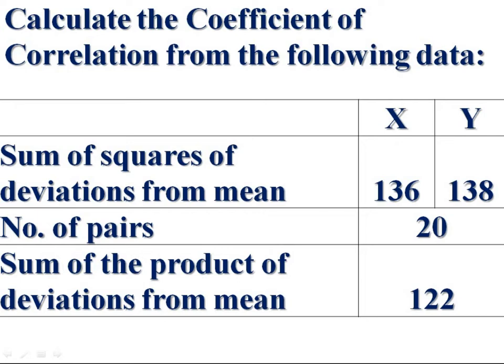We are given sum of squares of deviations from mean, number of pairs, and sum of the product of deviations from mean. This is the question and now we are entering into its solution.